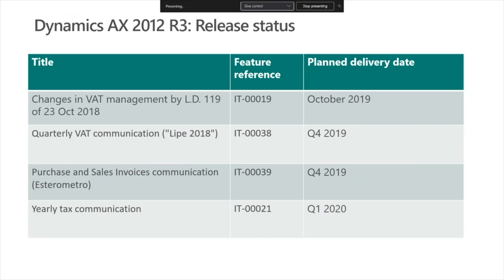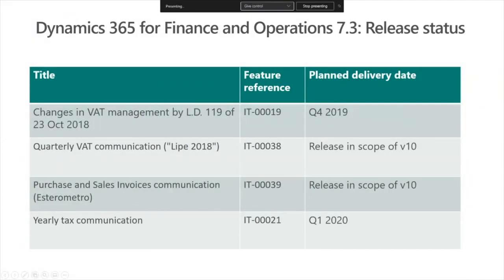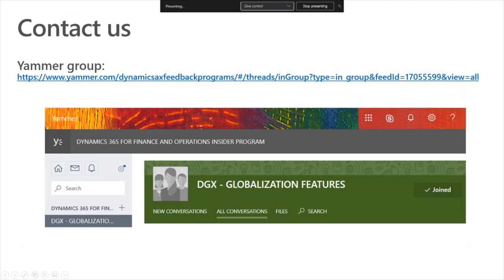Regarding the release status of AX 2012 R3, the update for this version is planned to be released in October of this year, though this plan can potentially change due to the extremely large quantity of changes which must be released. The impacted reports are also planned to be updated and released. The table on this slide shows the release schedule for version 7.3 — the main part of the update will be delivered during this calendar year. For reports, no specific updates are expected to be released separately, because this reporting is delivered via electronic reporting model and the same configuration changes for version 10 should be applicable for version 7.3.